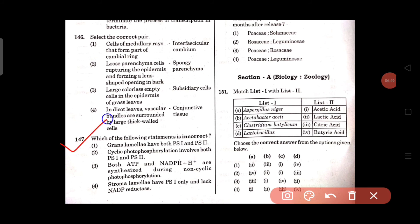Question number 147: Which of the following statement is incorrect? Grana lamellae have both PS1 and PS2, this is correct. Cyclic photophosphorylation involves both PS1 and PS2, this one is not correct. The incorrect statement is cyclic photophosphorylation involves both PS1 and PS2. The correct is cyclic photophosphorylation involves only PS1, that is photosystem 1 or P700. Option 2 is the right answer.